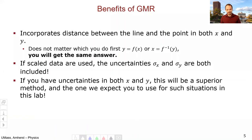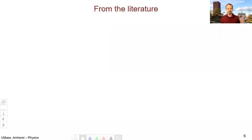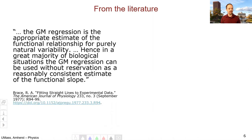So if you have uncertainties in both x and y, which is quite common, the geometric mean regression will be a superior method — and the one we expect you to use in this lab. And it's not just me: a paper fitting straight lines to experimental data from the American Journal of Physiology back in 1977 states that the geometric mean regression is the appropriate estimate of the functional relationship for purely natural variability and that in a great majority of biological situations, the geometric regression can be used without reservation as a reasonably consistent estimate of the functional slope.